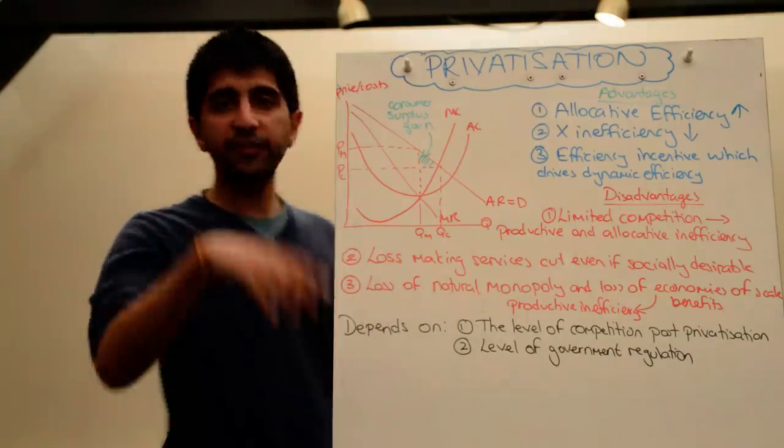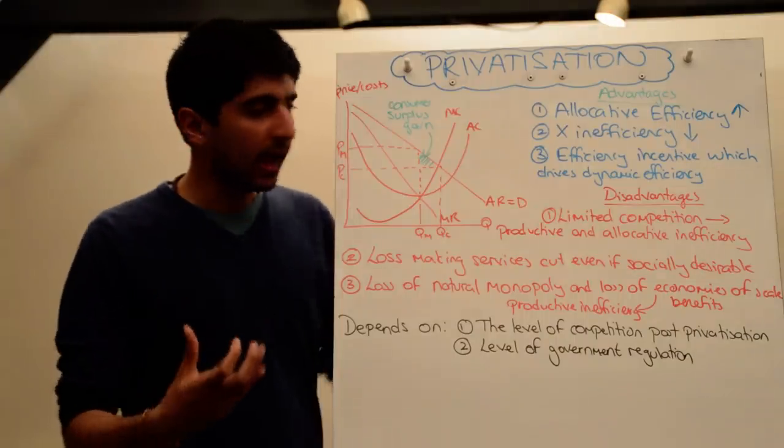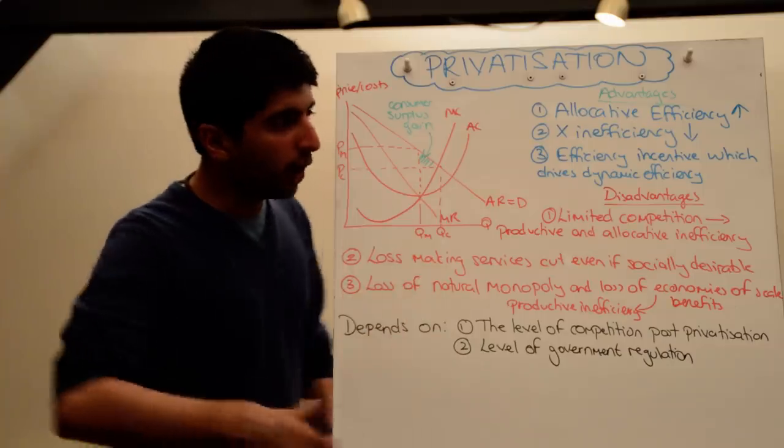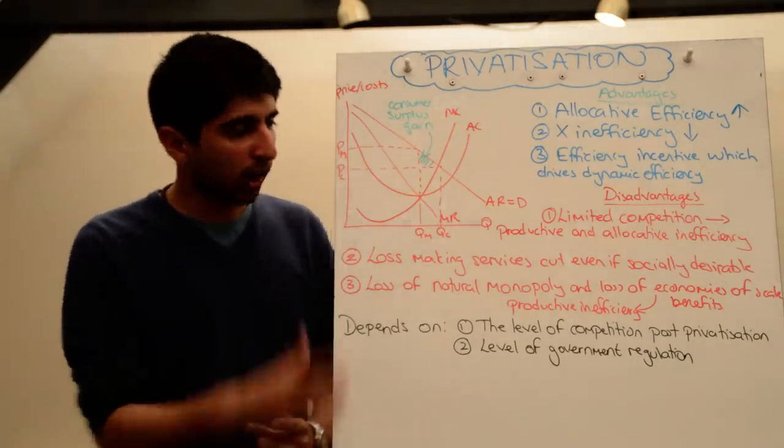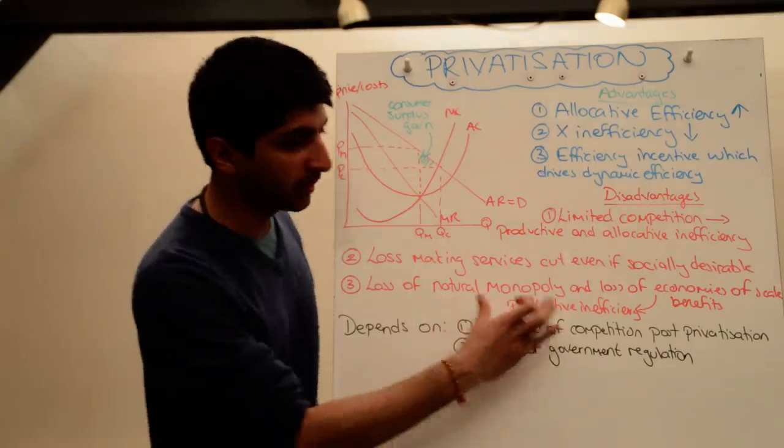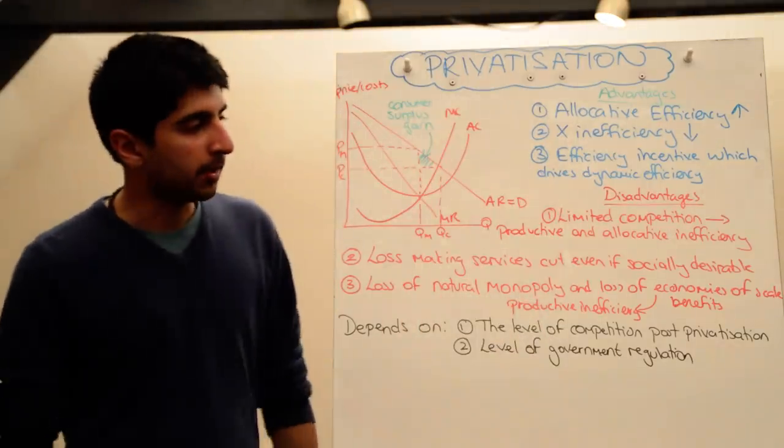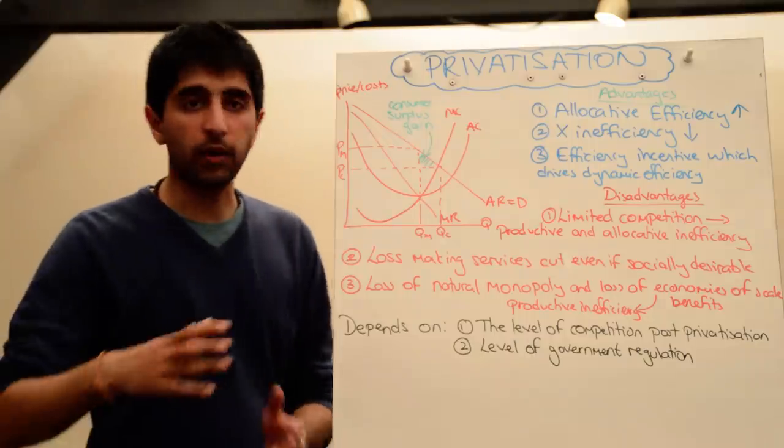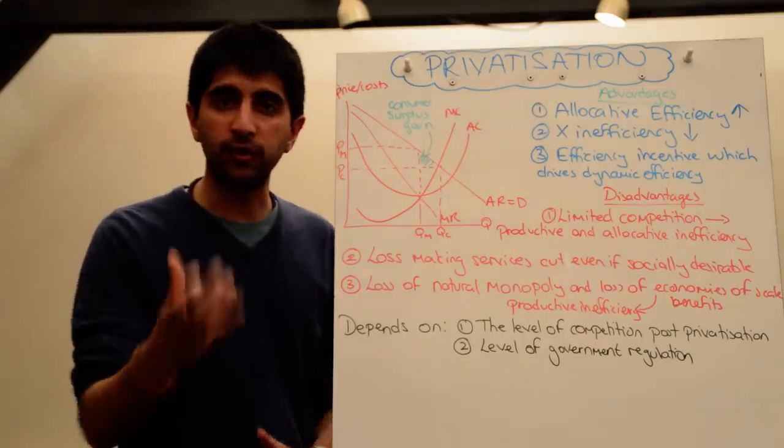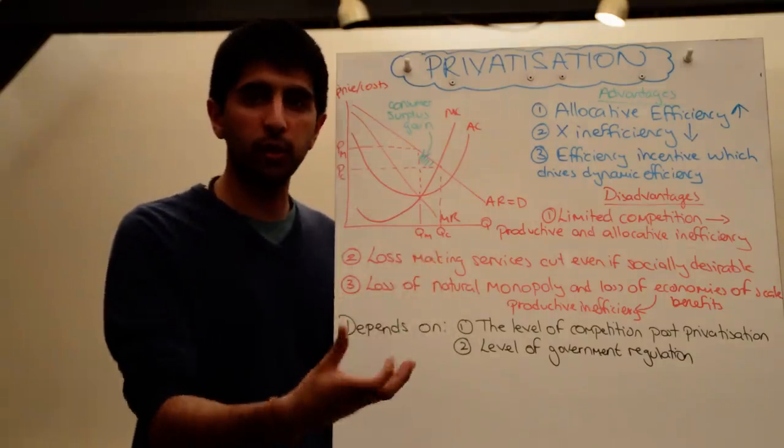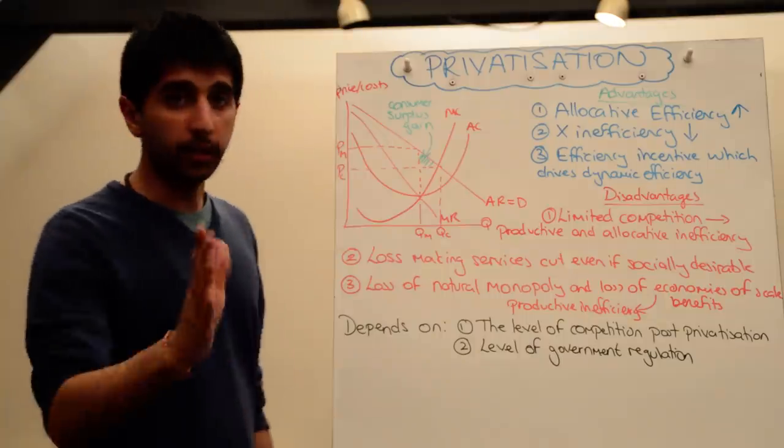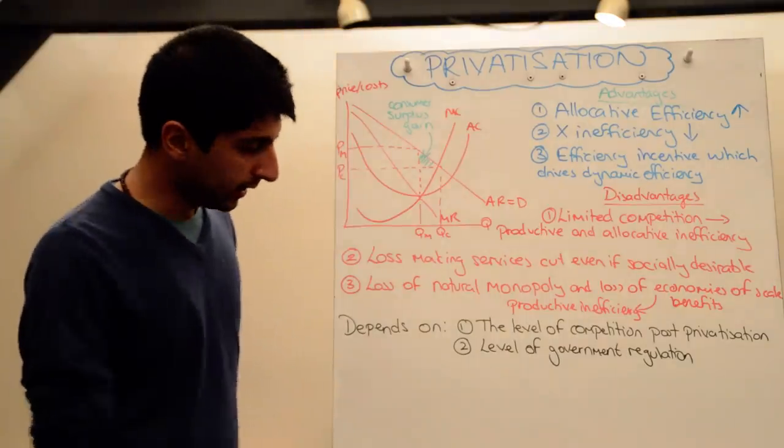At the same time, if beforehand there was a state-run natural monopoly, and that natural monopoly was benefiting from huge economies of scale, then by opening up the market to more competition, by privatising it, you are going to lose those huge economies of scale benefits, which can again lead to productive inefficiency now, as average costs can't be minimised because you are actually allowing more firms to enter the market. Which means each individual firm can't produce as much, and therefore won't be able to exploit all potential economies of scale. So the loss of natural monopoly is a big issue here, if it applies in whatever industry you are looking at.